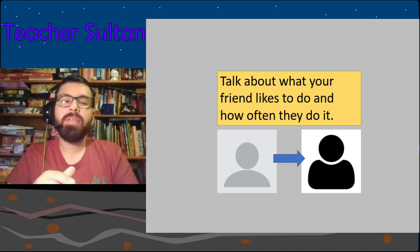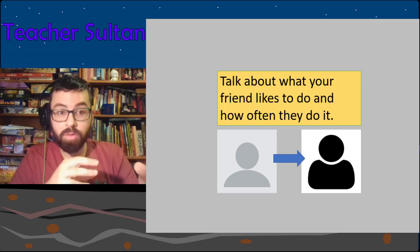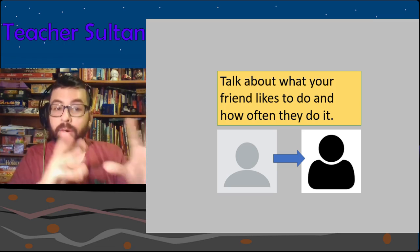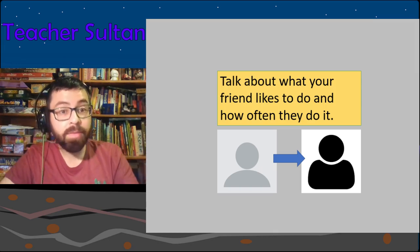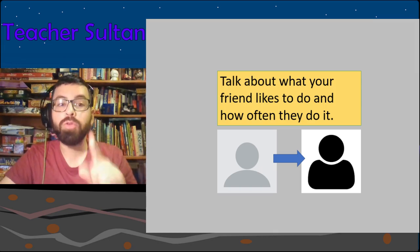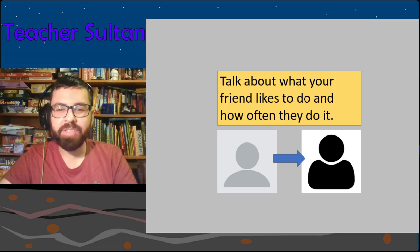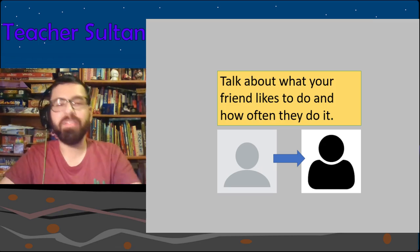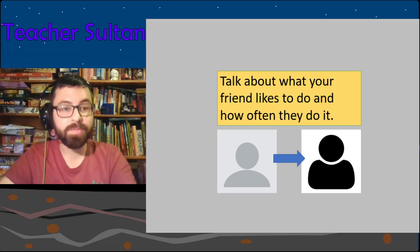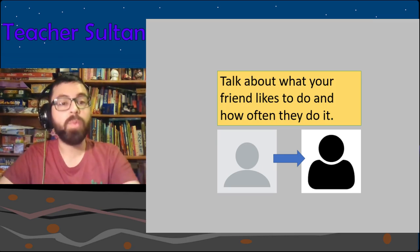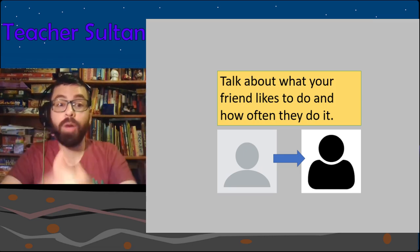Now talk about a friend — just like we just did. Describe what your friend likes to do and how often they do it. For example: 'My friend likes to go jogging, go swimming, play badminton and travel. He travels once a month.' Pause and do that. You can also write in the comments.